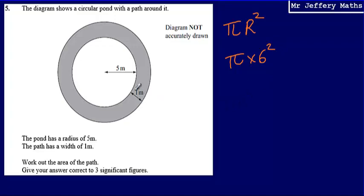And then from that, I'm going to take away the area of the smaller circle, which is pi times the radius, which is five, and then we're squaring it for our formula.